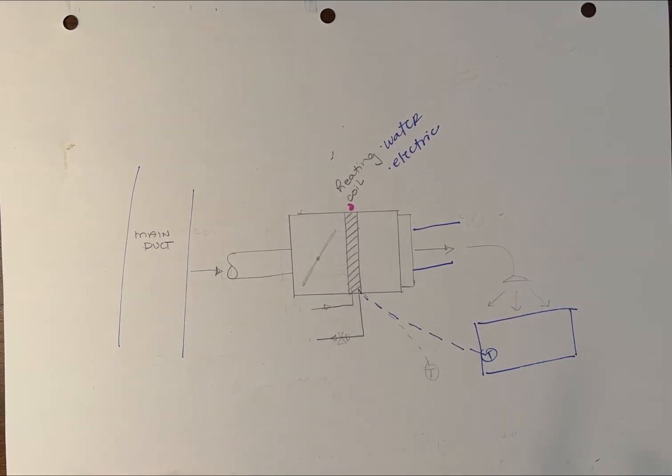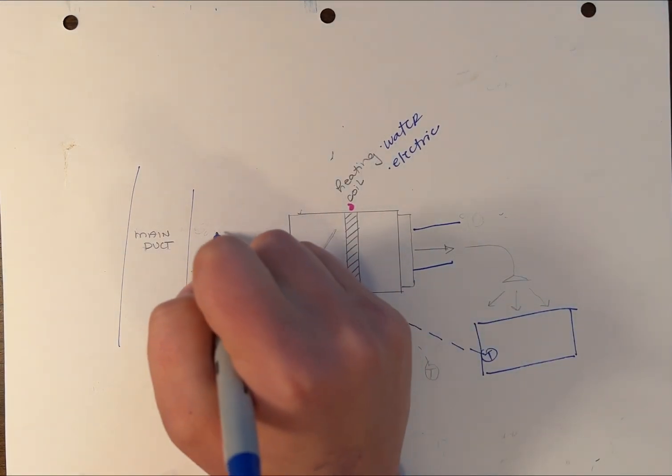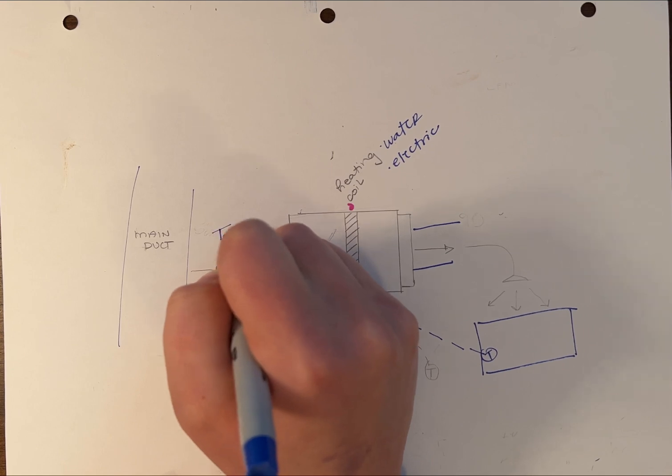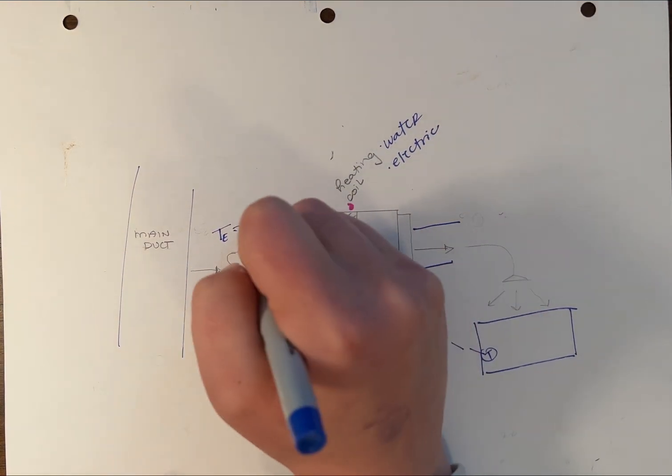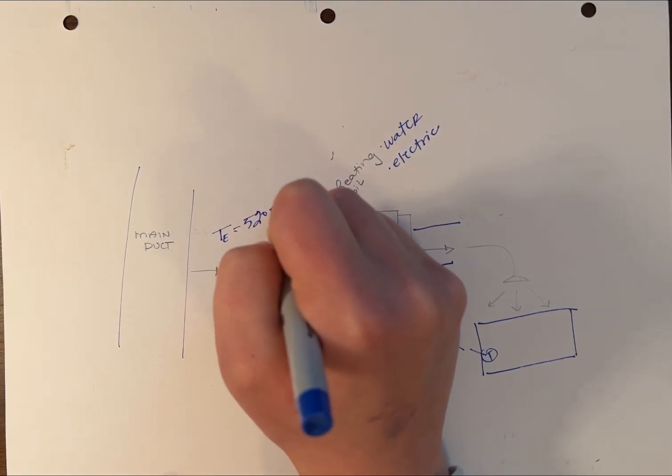To understand the basics of how a VAV box is designed and selected, you need to know your entering temperature. Most of the time, that will be 52 degrees Fahrenheit.